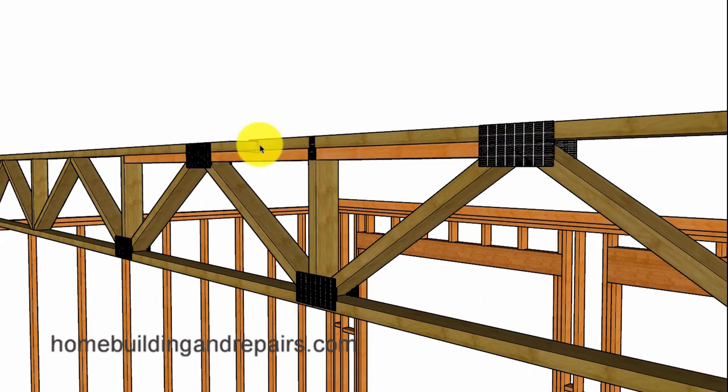And the board we're going to be installing will be a two by four that's going to be at least six feet long. So make sure that your blocks are at least three feet away from the center on each side.